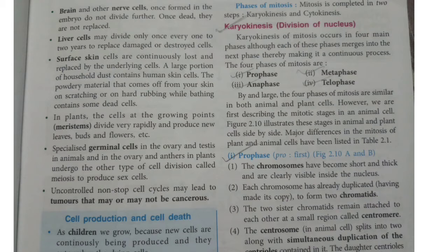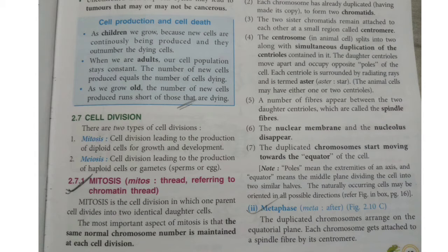Uncontrolled, non-stop cell cycles may lead to tumors that may or may not be cancerous. Cell production and cell death: as children, we grow because new cells are continuously being produced and they outnumber the dying cells. When we are adults, our cell population stays constant — the number of new cells produced equals the number of cells dying. As we grow old, the number of new cells produced runs short of those that are dying.